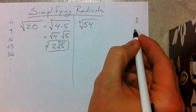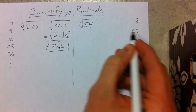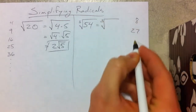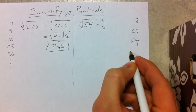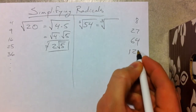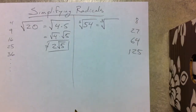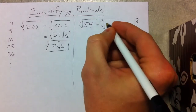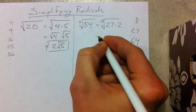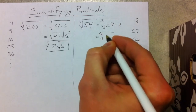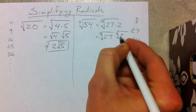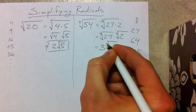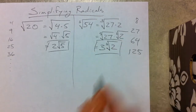3 cubed is 3 times 3 times 3, which is 27 — and that's the one we see in 54. 4 times 4 times 4 is 64, 5 times 5 times 5 is 125. So we write 54 as 27 times 2, giving us the cubed root of 27 times the cubed root of 2. The cubed root of 27 is 3, so we leave the 2 inside — and that's our final answer: 3∛2.